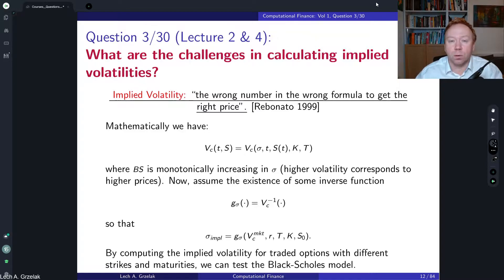In the Black-Scholes case, we only have one parameter if we neglect of course interest rates and dividends. We have one parameter that we can use to express implied volatilities. Implied volatilities are very handy to deal with.